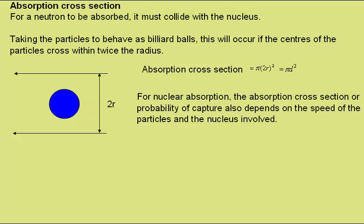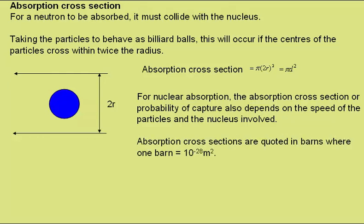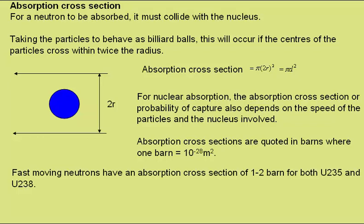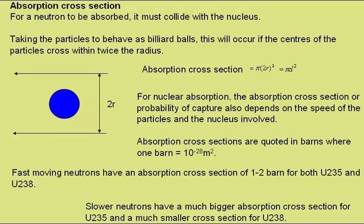For nuclear absorption, the absorption cross-section or probability of capture also depends on the speed of the particles and the nucleus involved. Absorption cross-sections are quoted in barns, where one barn is 10 to the minus 28 square metres. Fast-moving neutrons have an absorption cross-section of between one and two barns for both uranium-235 and uranium-238. Slower neutrons have a much bigger absorption cross-section for U-235 and a much smaller cross-section for U-238, making them much more suitable for fission.